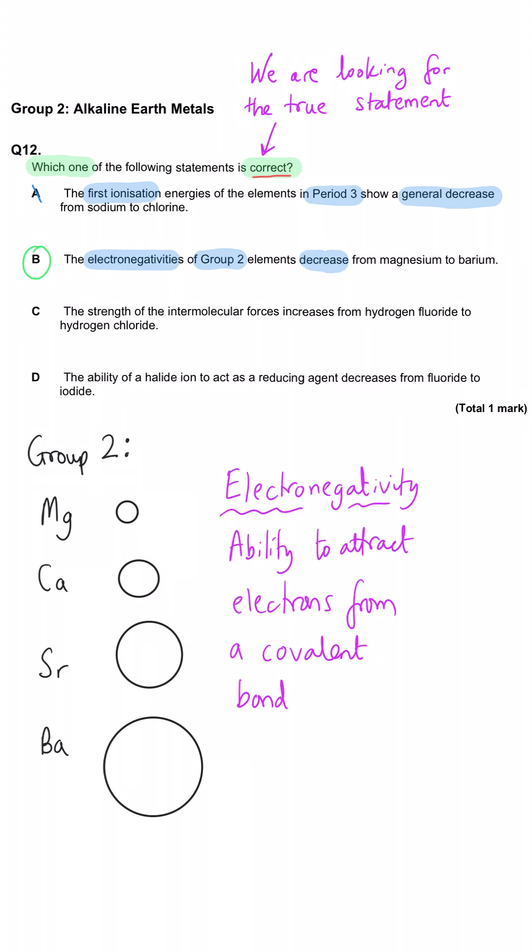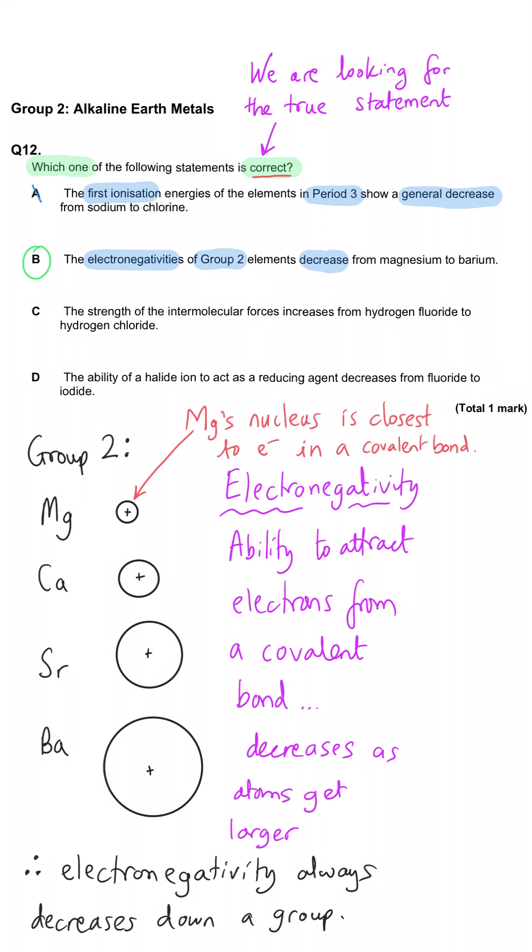Electronegativity will decrease down any group in the periodic table because the attraction for the covalently bonded electrons is going to decrease because the atom gets larger, and its nucleus's pull is shielded by more energy levels.